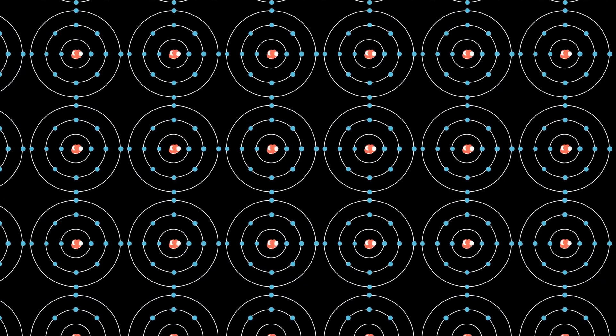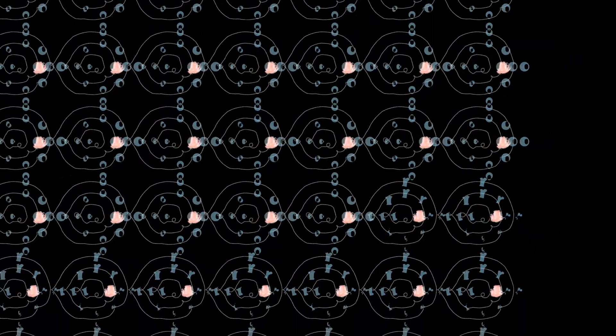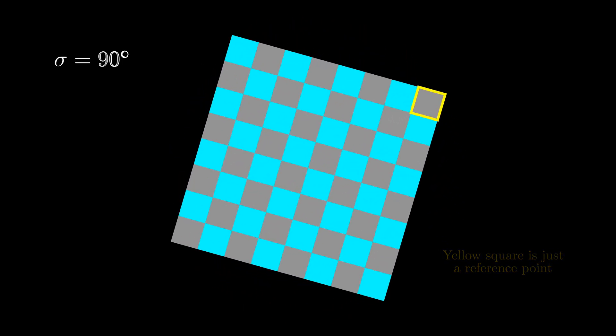As the name suggests, group theory is a subject which centers around a precise mathematical object known as a group. Intuitively, a group is any symmetry of an object. So pick a specific object, say a checkerboard, and rotate it by 90 degrees. After this action, the board looks almost exactly the same, except now the color of the corners have flipped. So we have not preserved the original structure.